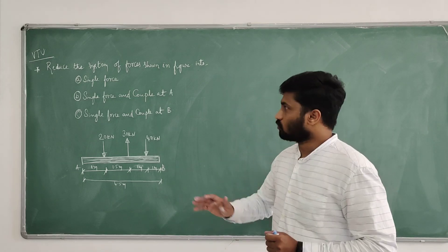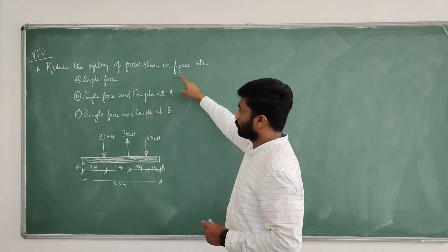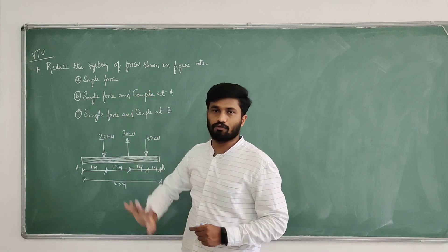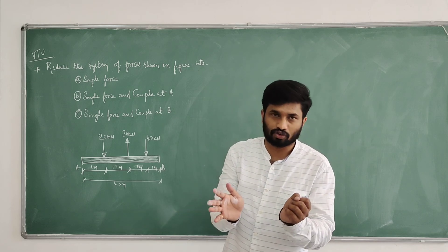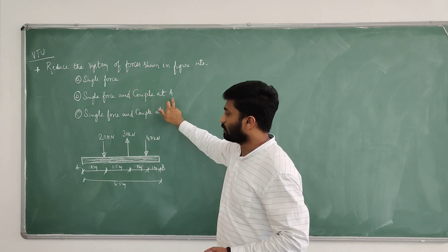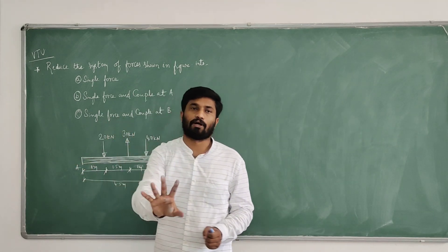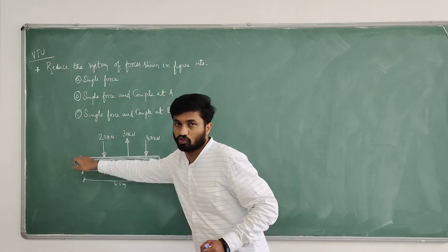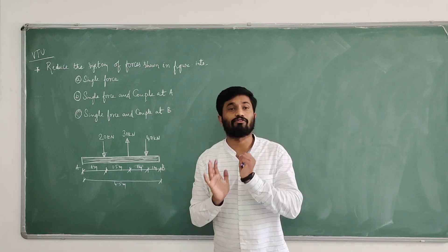In this particular problem, which is a very important problem for the Faskelian BTU examination, we have to reduce the system of forces shown in the figure. We need to reduce this system into: first, a single force system; second, a single force and couple at point A; and third, a single force and couple at point B. This is an 8-mark problem.